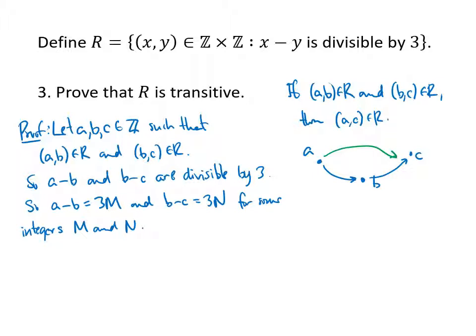Now, our goal is to show that a minus c is divisible by 3. That will tell us that (a,c) is in my relation. So how do I get from a minus b equaling 3M? This is what I'm thinking about. And b minus c equaling 3N. How do I get a minus c? I kind of want to get rid of those b's, right? I don't really want that b and I don't really want that b. Well, if I think about adding those two equations together, that's going to be a minus b, but then plus b is going to cancel out. And then plus a negative c. And that's going to be 3M plus 3N, which I'm going to be able to factor a 3 out of. And so that's exactly what I'm going to do.